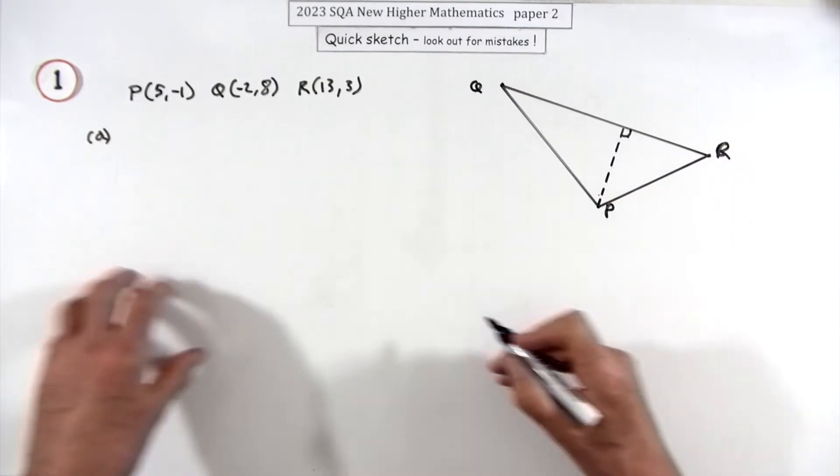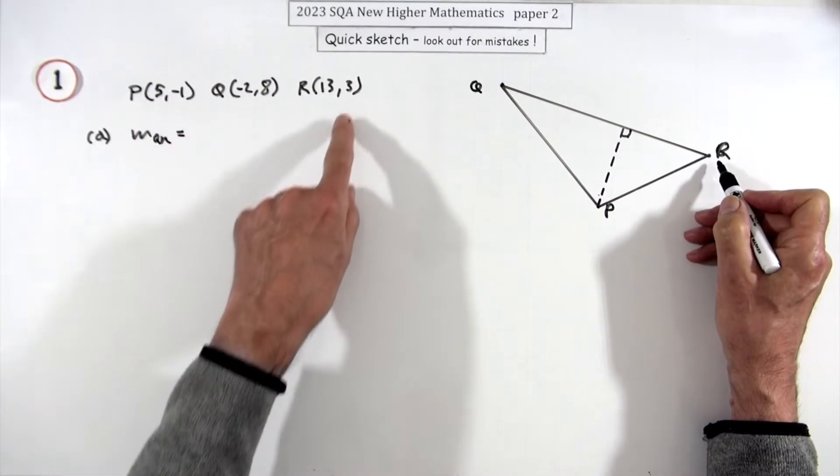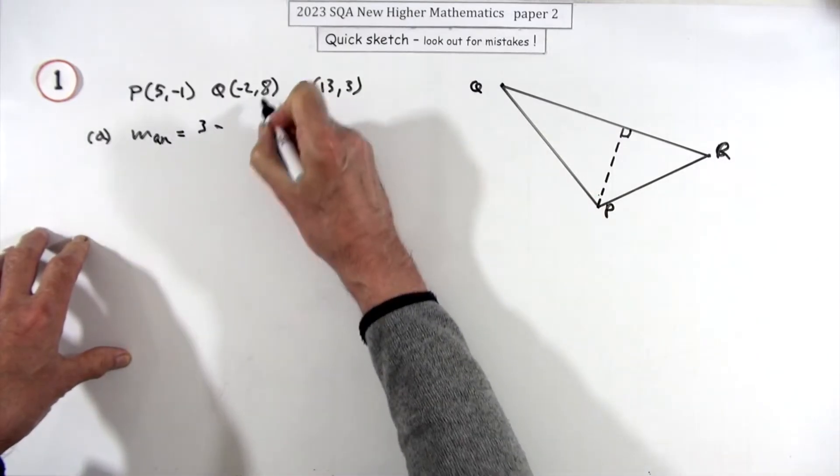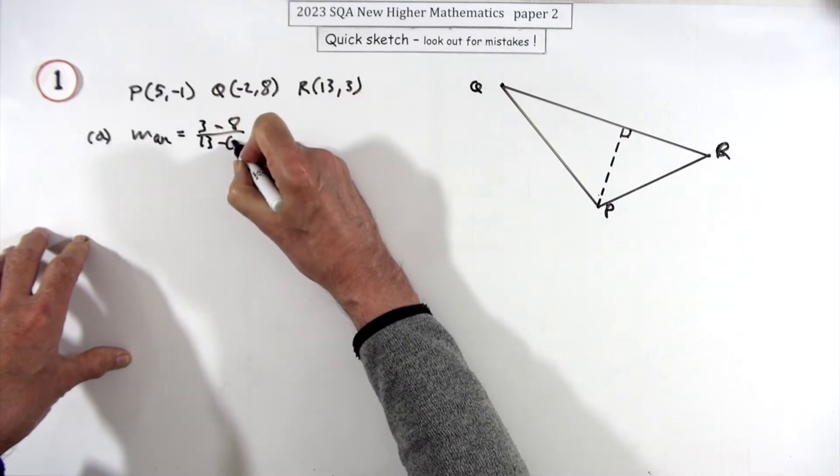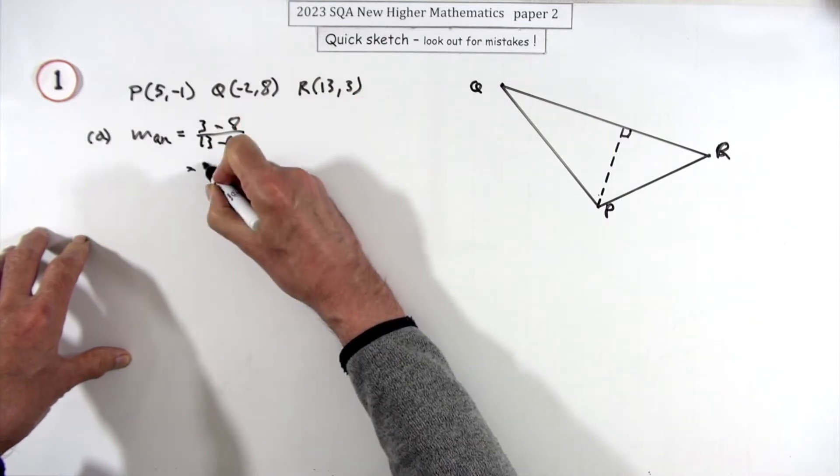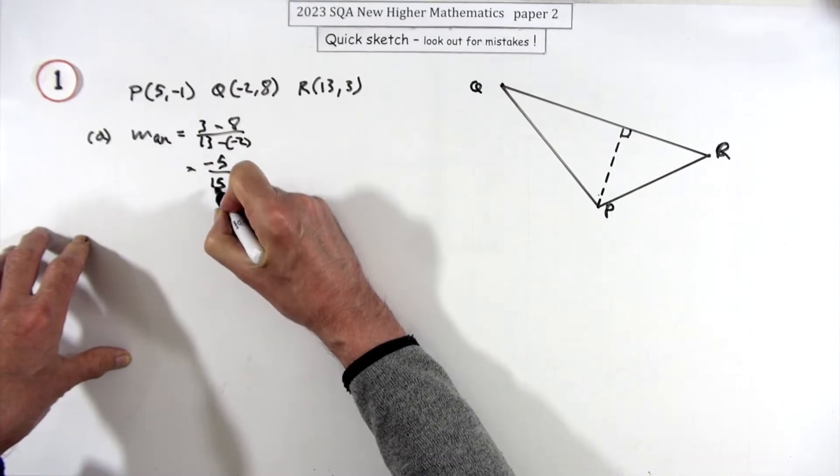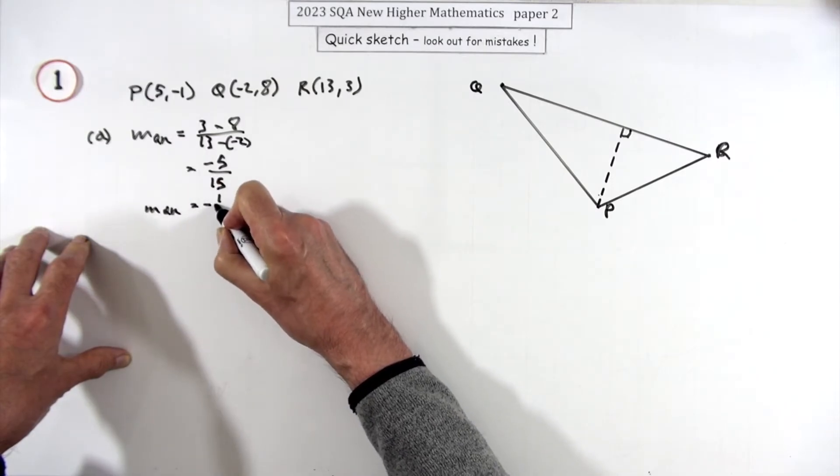So you can compare it to the gradient of QR. So QR, I'm just going to use them here. It'll be 3 take away the 8 over the 13 take away the negative 2. So that's a negative 5 over, and that'll be plus 2, so that's 15. Which means the gradient of QR is negative a third.